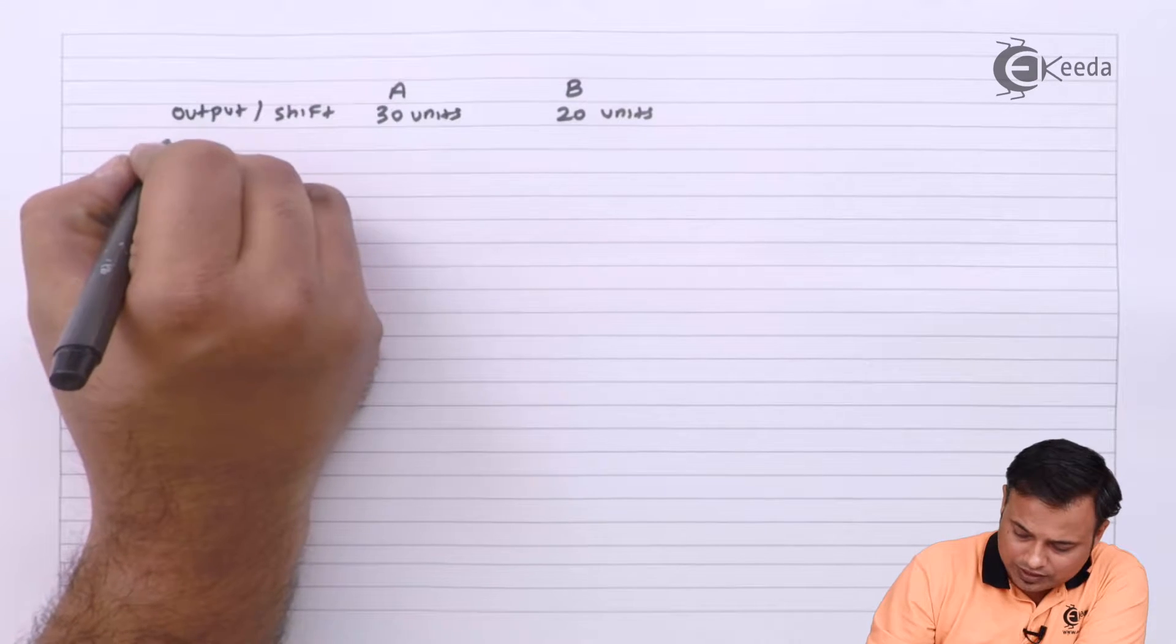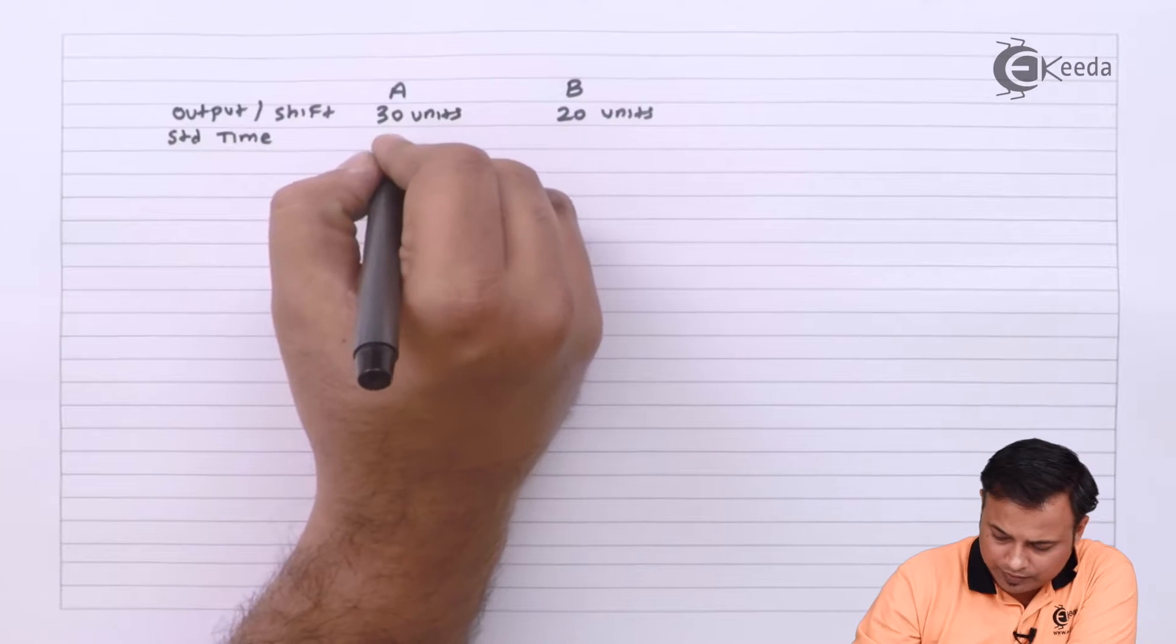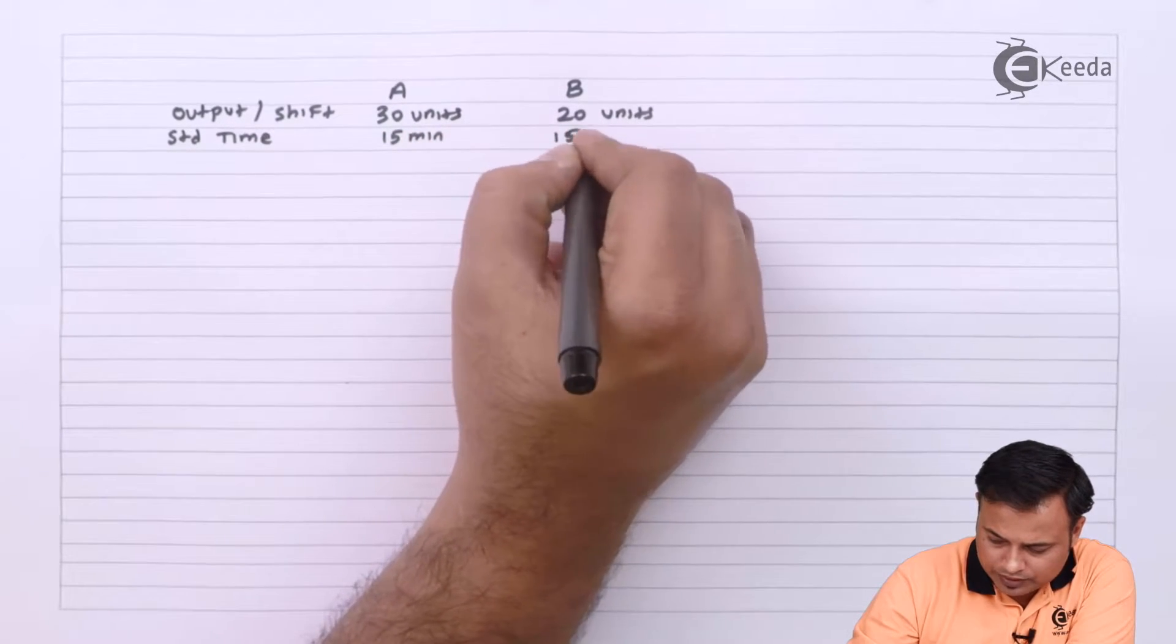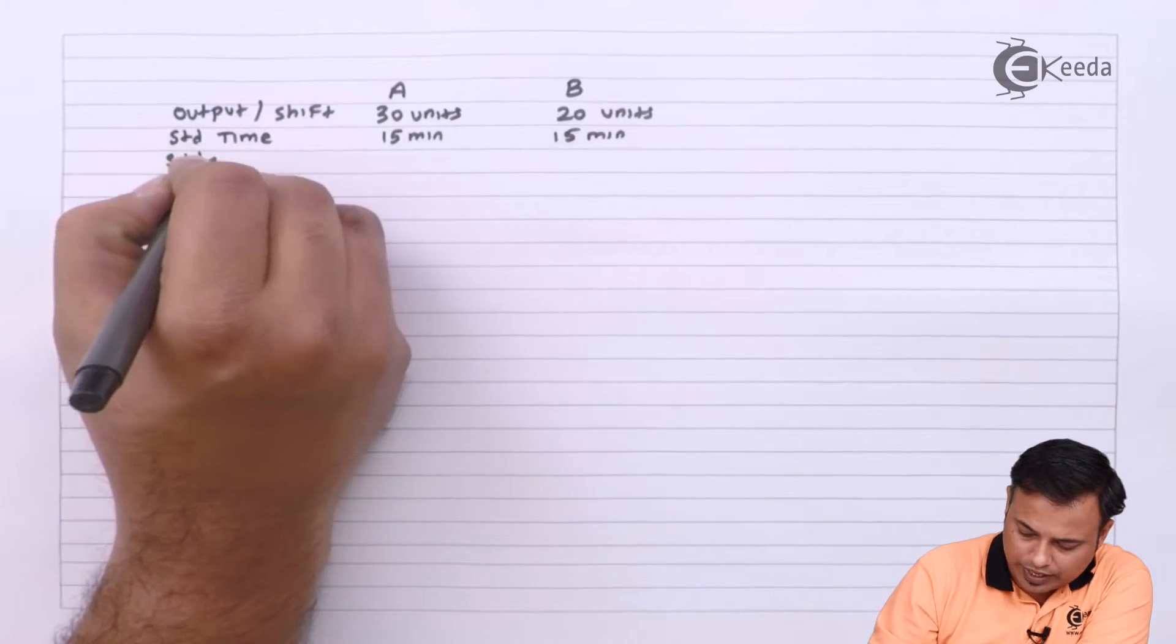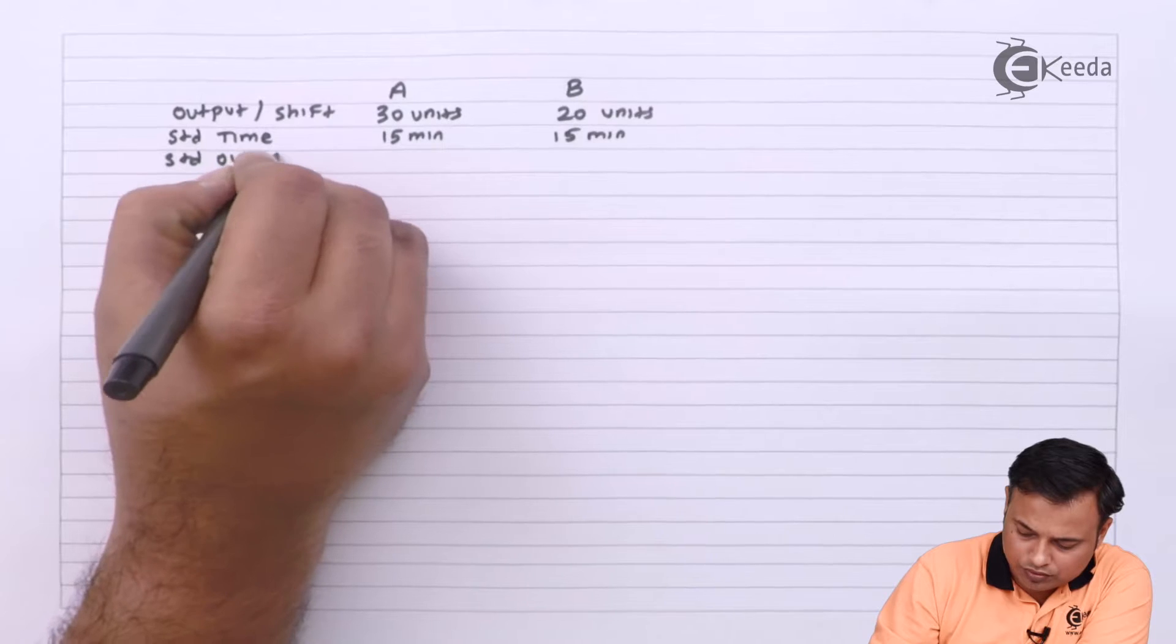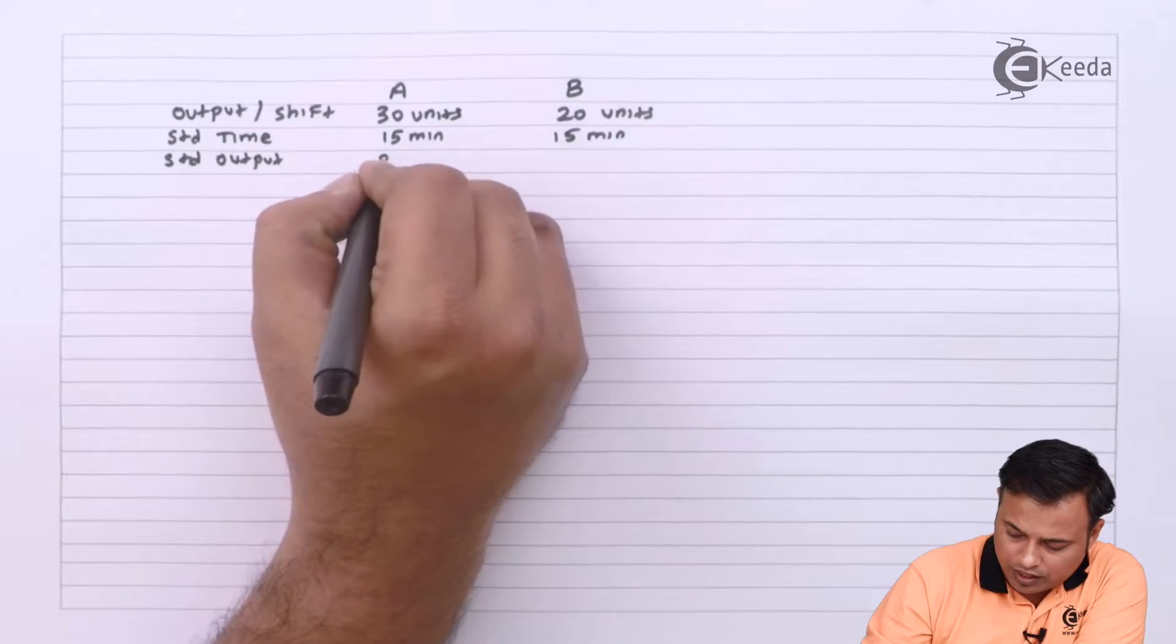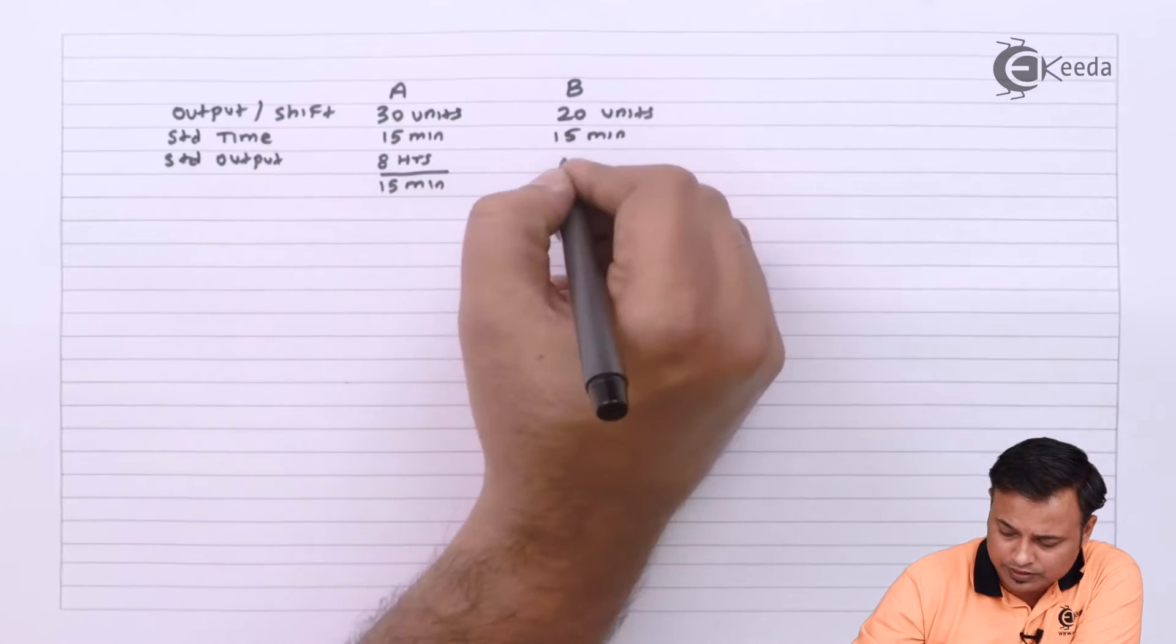Standard time or the normal time is 15 minutes. So my standard output will be simply 8 hours shift divided by 15 minutes.